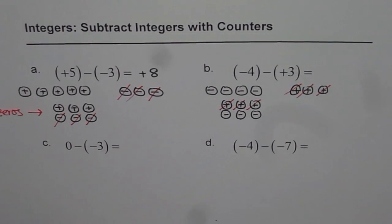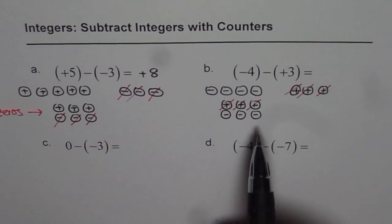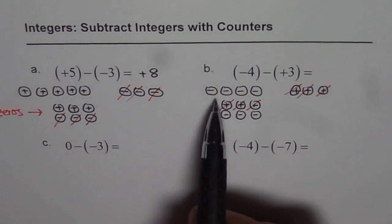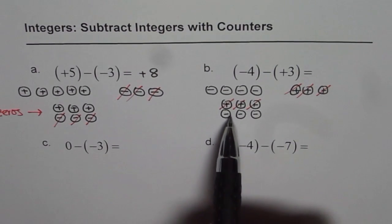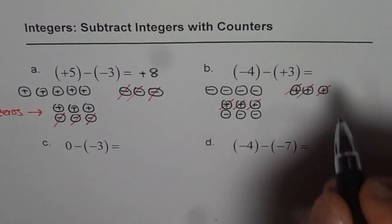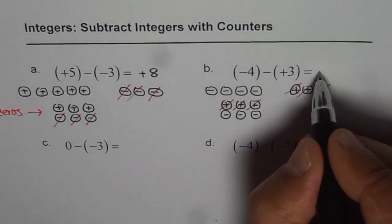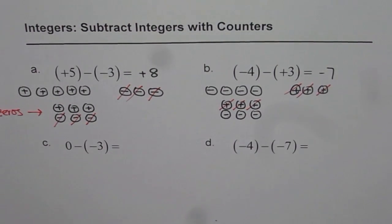What are you left with? The answer. The answer is 1, 2, 3, 4, 5, 6, 7 — negative 7, since these are all negative counters. I hope you understand the steps.